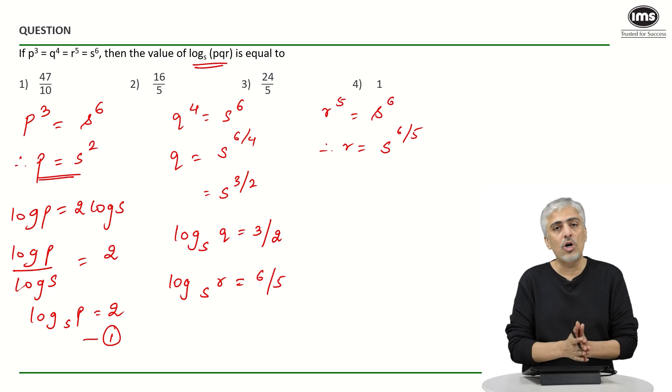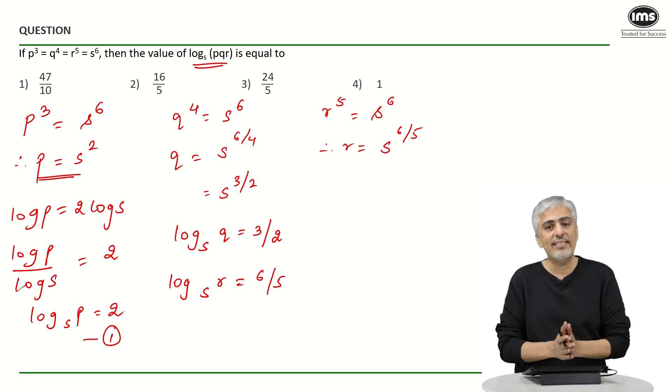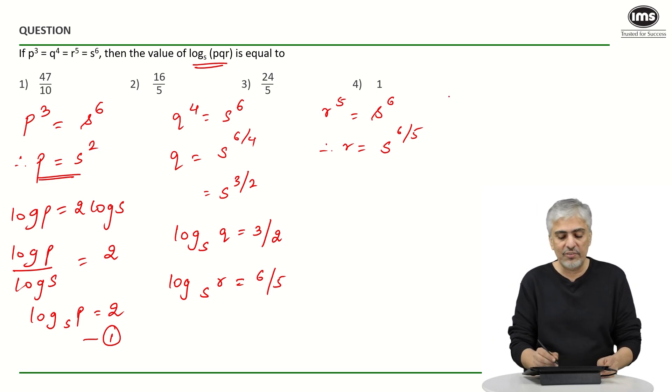Log pqr is nothing but log p plus log q plus log r to the base s. So, if I take the question and simplify that, it becomes log p to the base s plus log q to the base s plus log r to the base s. Which is nothing but 2 plus 3 by 2 plus 6 by 5.